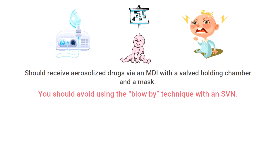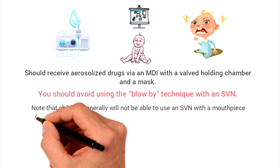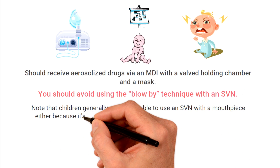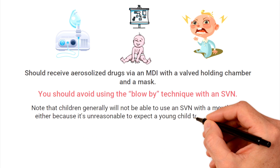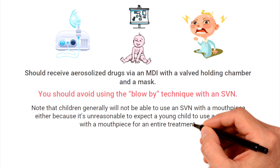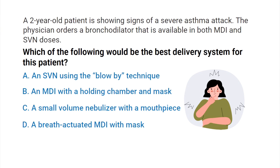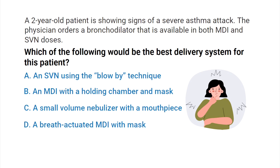Also note that children generally will not be able to use an SVN with a mouthpiece either, because it's unreasonable to expect a young child to use the nebulizer with the mouthpiece for an entire treatment. So by breaking down the question and using what we know about aerosol drug delivery in children, we can determine that the correct answer is B — an MDI with a holding chamber and mask.